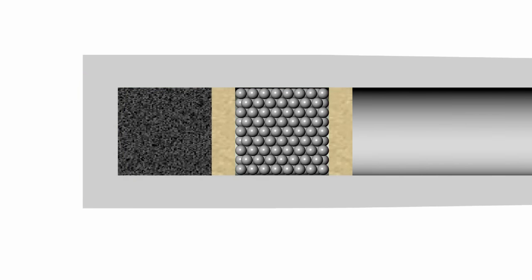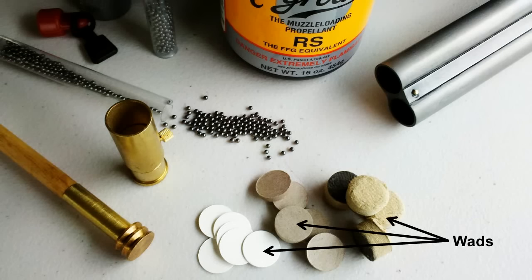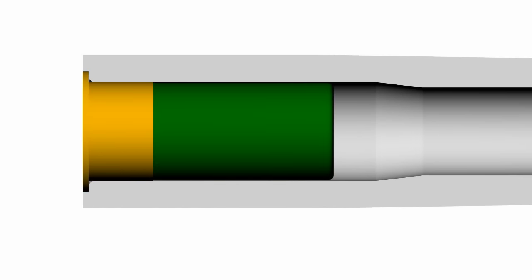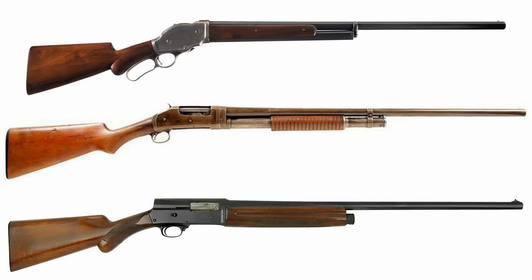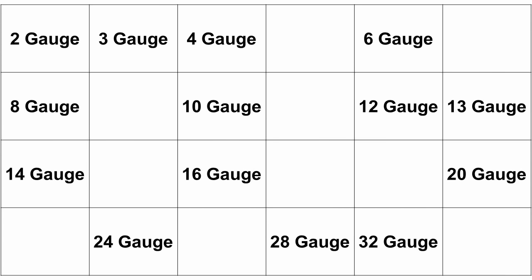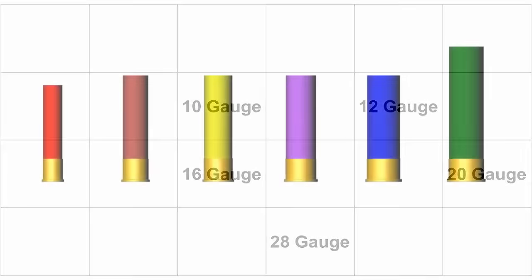With old muzzle-loading shotguns, the gauge could be pretty much anything the gunsmith or customer fancied. All that really needed to be sized to the bore were the wads, and most users simply cut those themselves. But with the advent of self-contained, mass-produced shot shells, along with more complex breech-loading and repeating shotguns, ammo manufacturers and gun makers began to focus on smaller numbers of standardized gauges. This trend continued as advancements in powders and components improved and expanded shot shell capabilities across the board, and as a result, only a handful of the most popular gauges remain in use today.